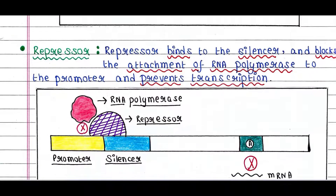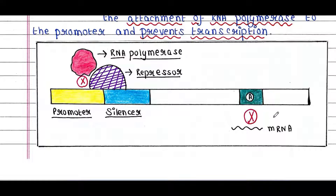Next is the repressor. The repressor binds to the silencer and blocks the attachment of RNA polymerase to the promoter, preventing transcription. The function of the silencer is equivalent to the operator found in prokaryotes — otherwise the concept is the same.